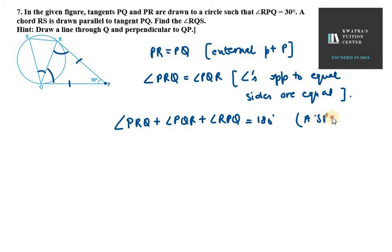We can change PRQ to PQR since they're equal. Let's substitute the value of RPQ. RPQ is given to us as 30 degrees, so we put that value in.